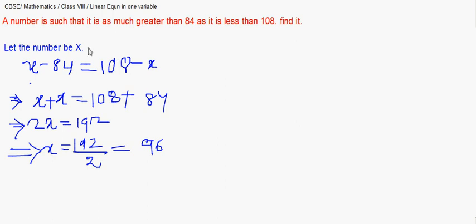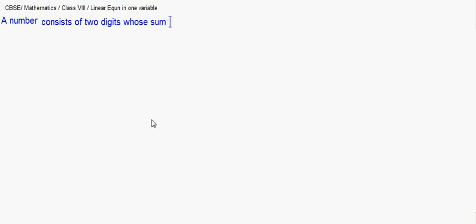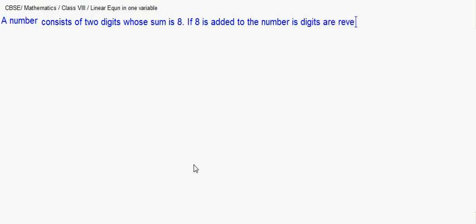The answer is 96. Moving on to another question. A number consists of two digits. When we write a two-digit number, there is always a units place and a tens place. If 18 is added to the number, its digits are reversed. Find the number.